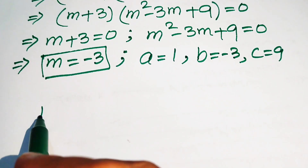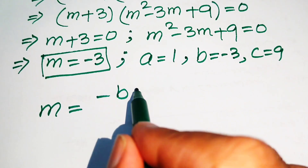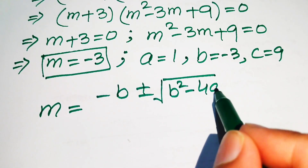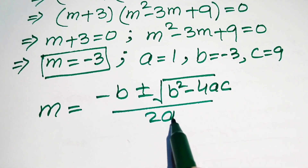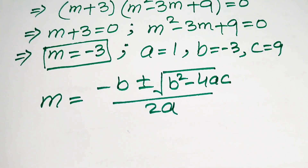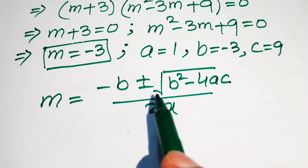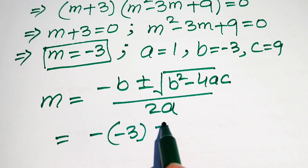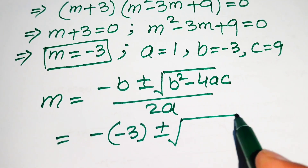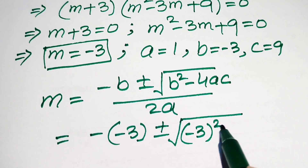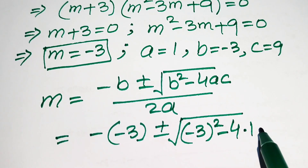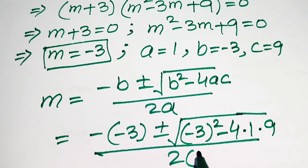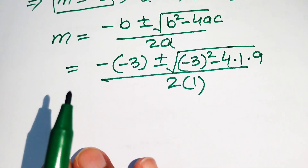The quadratic formula is m equals (minus b plus or minus square root of b squared minus 4ac) divided by 2a. Substituting, we get m equals (minus(minus 3) plus or minus square root of (minus 3) squared minus 4 times 1 times 9) divided by (2 times 1).